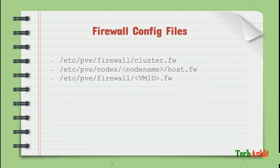The major firewall configuration files are stored in three locations: /etc/pve/firewall/cluster.fw for cluster-level rules, /etc/pve/nodes/<node-name>/host.fw for host-level rules, and /etc/pve/firewall/<vmid>.fw (for example, 100, 101, 102) for VM or container rules. These are where your actual firewall rules are written and stored.